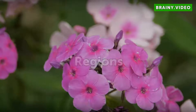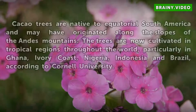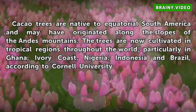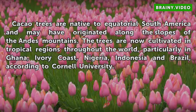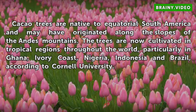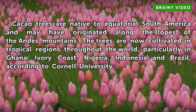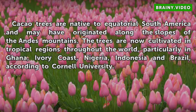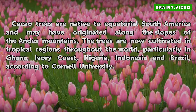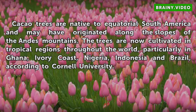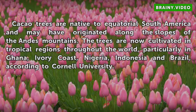Regions. Cacao trees are native to equatorial South America and may have originated along the slopes of the Andes Mountains. The trees are now cultivated in tropical regions throughout the world, particularly in Ghana, Ivory Coast, Nigeria, Indonesia, and Brazil, according to Cornell University.